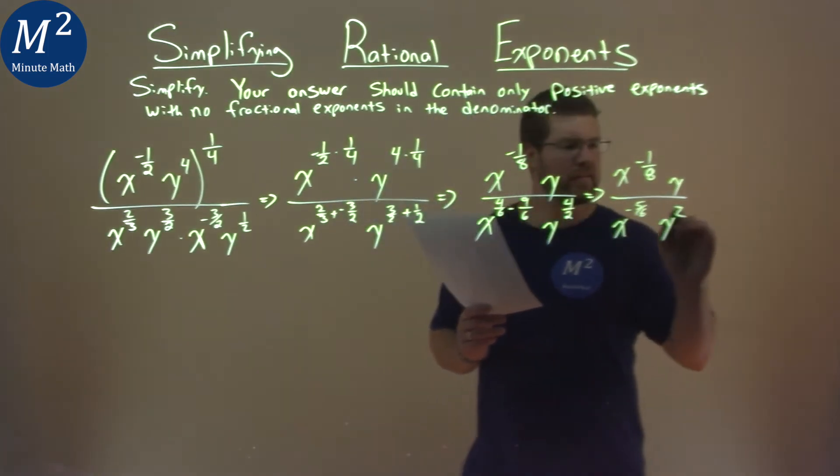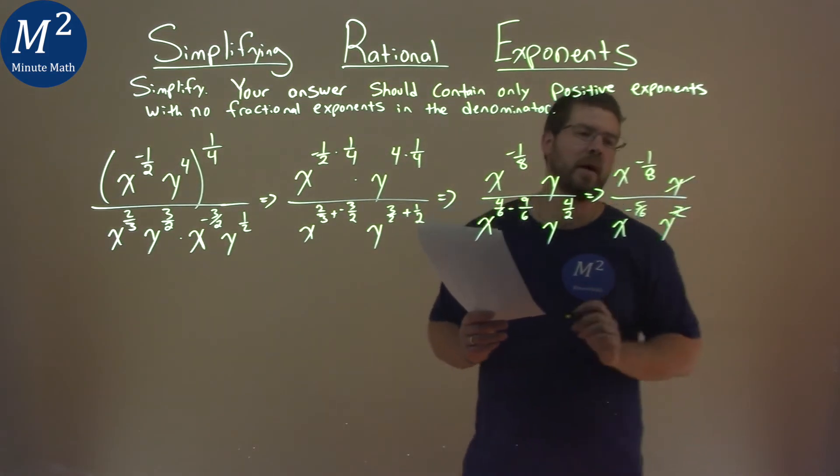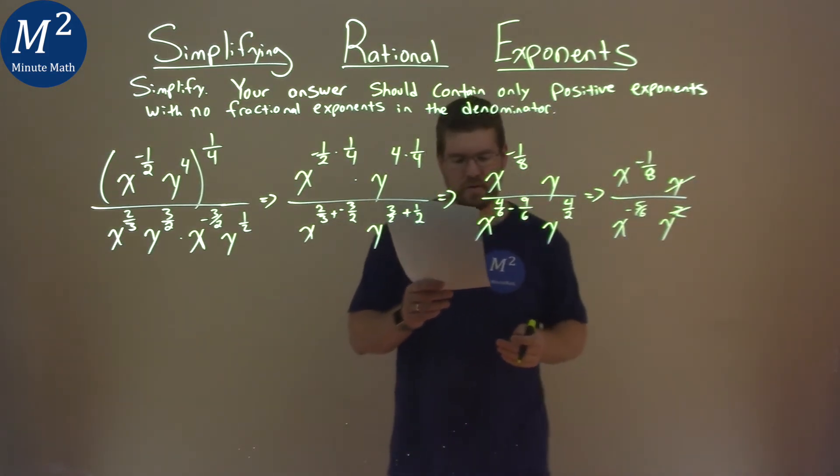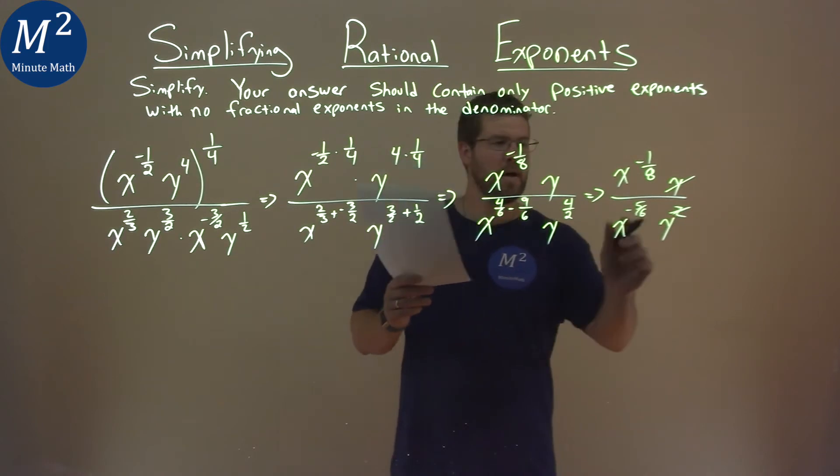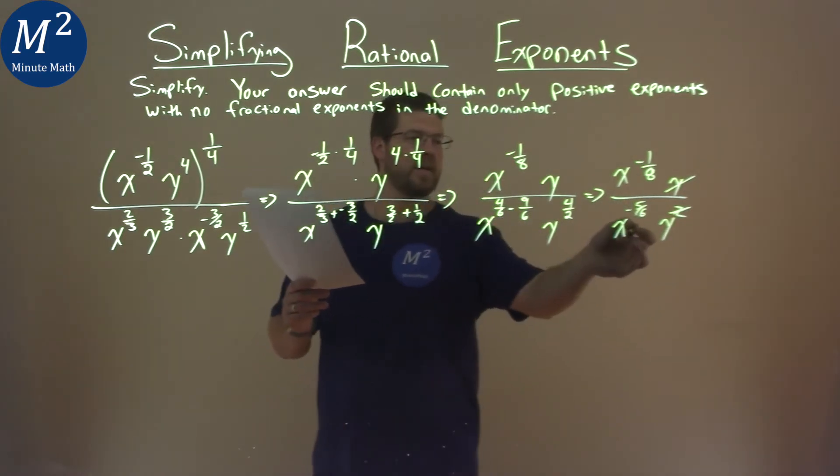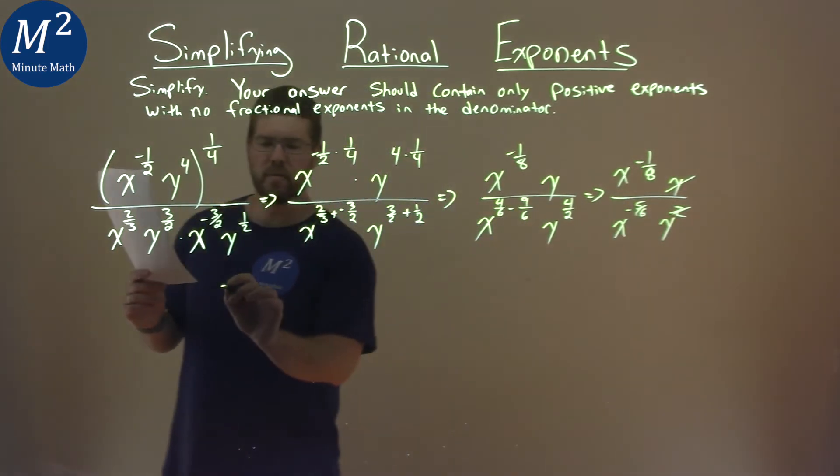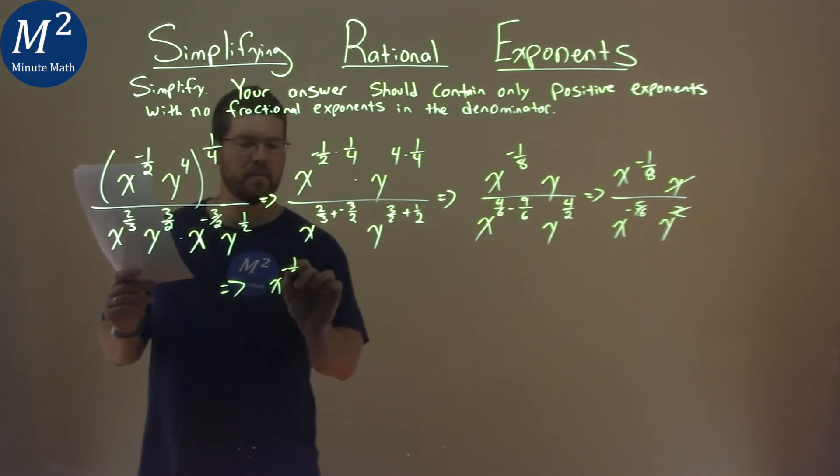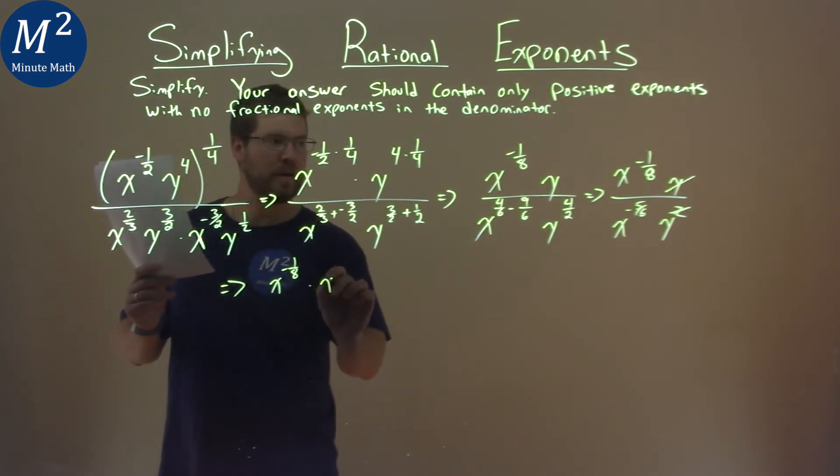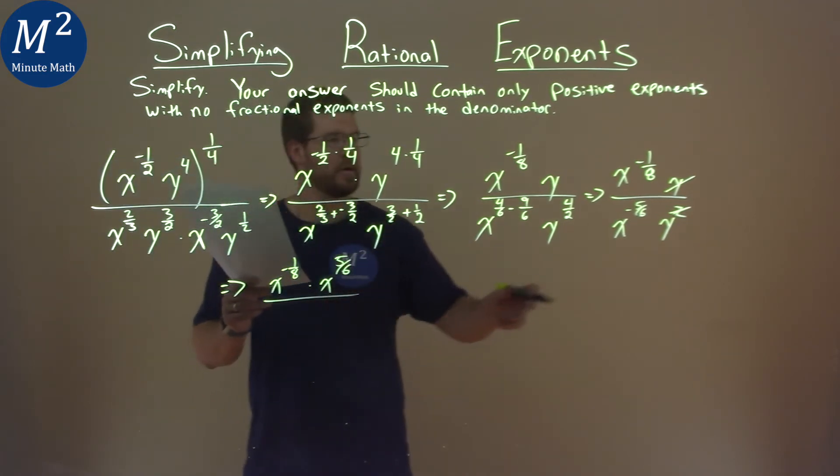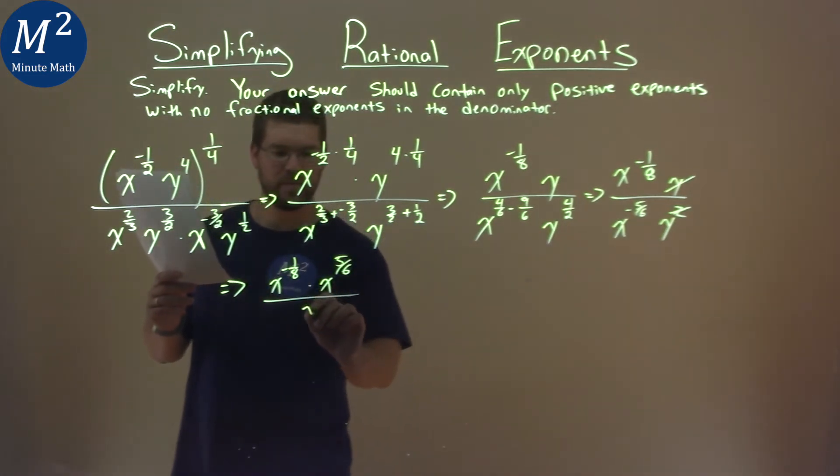Now that squared, though, we can get rid of that y, cancel each other out, make it easier on ourselves here. Now I'm going to bring this negative exponent, x to the negative five-sixth, to the numerator. So doing that here, we have x to the negative one-eighth times x to the positive five-sixth now in the numerator, and our denominator still has a y in it.